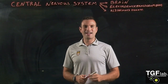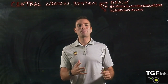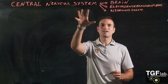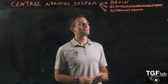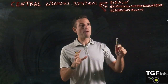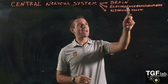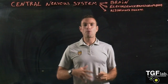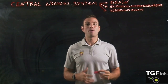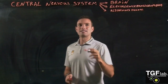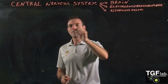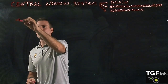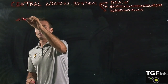Welcome back to this second part of this class about the central nervous system and the brain. Today we are going to look at the electroencephalogram, or EEG, and what it means and what it measures. The electroencephalograph is going to measure brain activity.